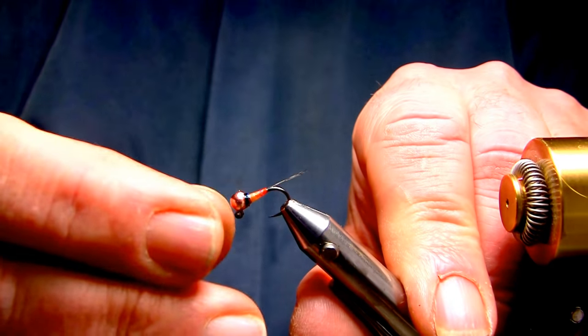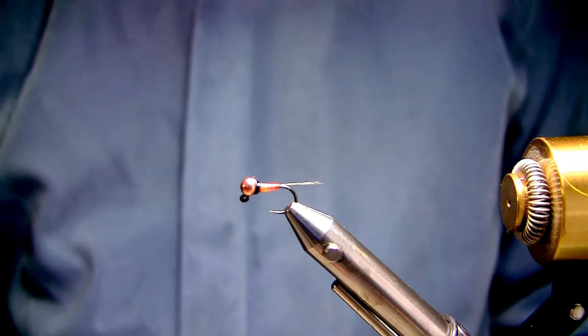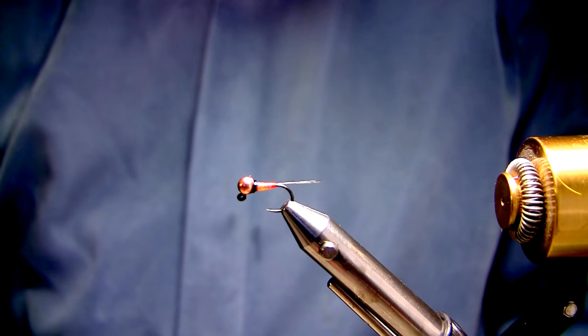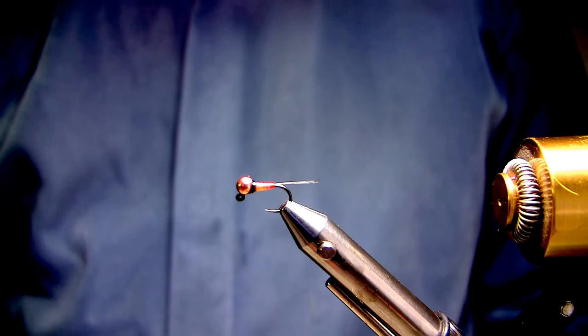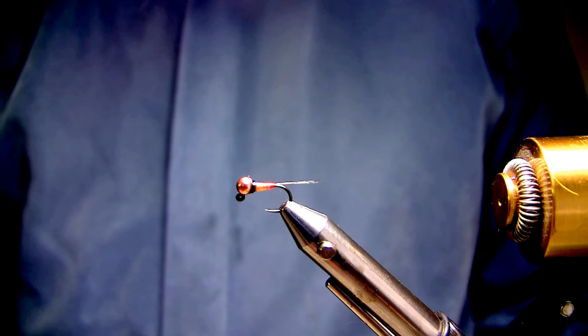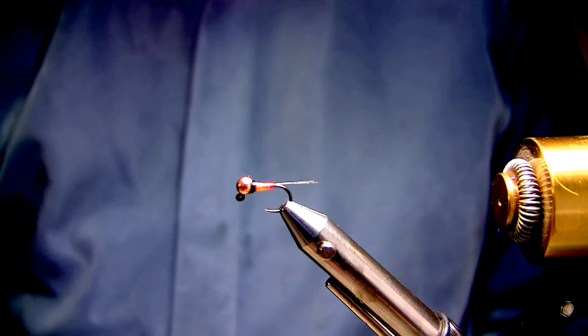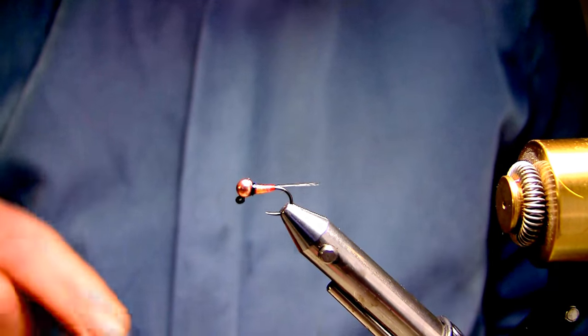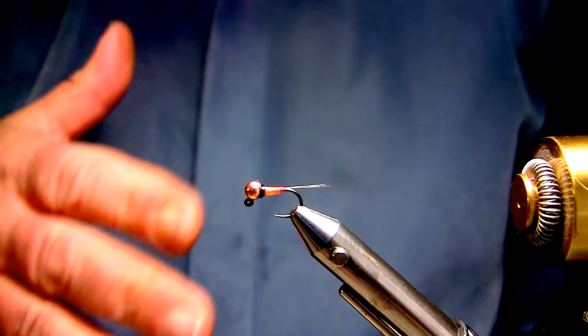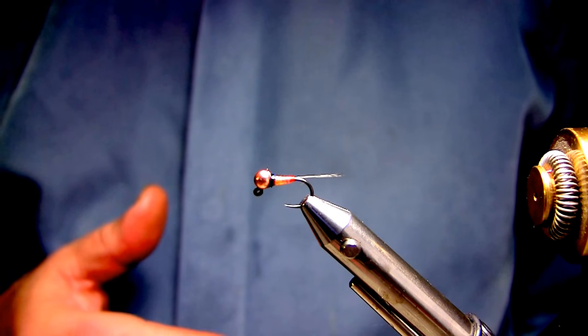So I tie these in blacks, reds, pinks, rainbow colors, rainbow red, rainbow black. There's a host, just even UTC thread. If I want something more in a natural color in the olives or browns. There's a hundred different ways of tying this by changing material. The tying technique or procedure for myself doesn't change for the most part. This is pretty much how I have a tendency to tie them all the time.